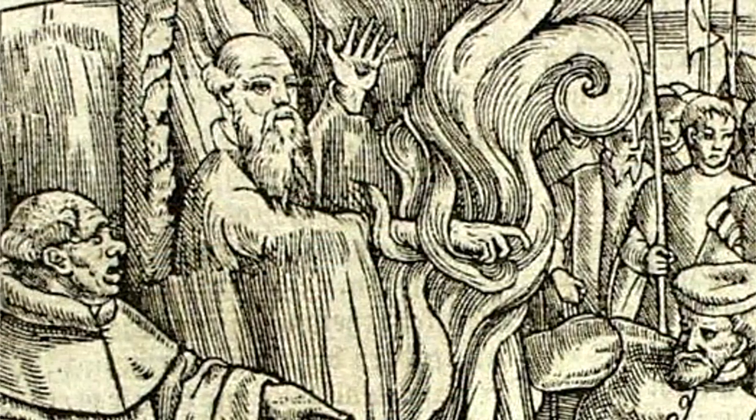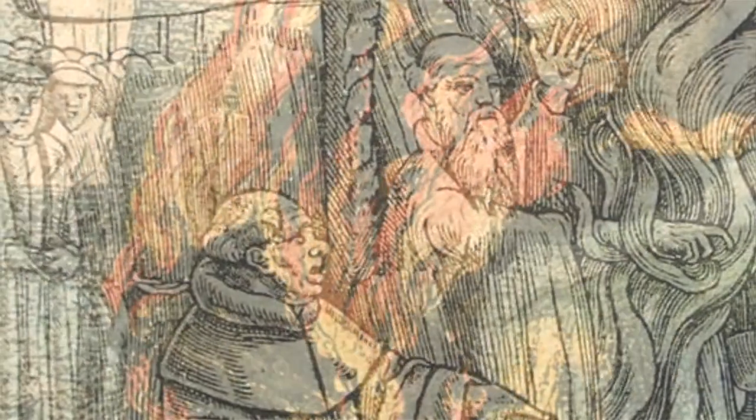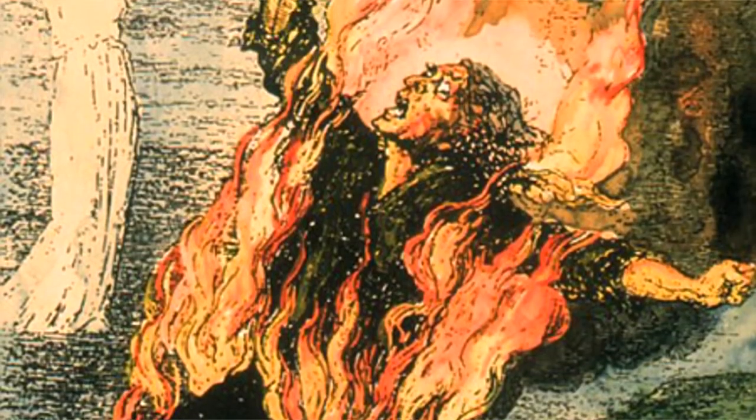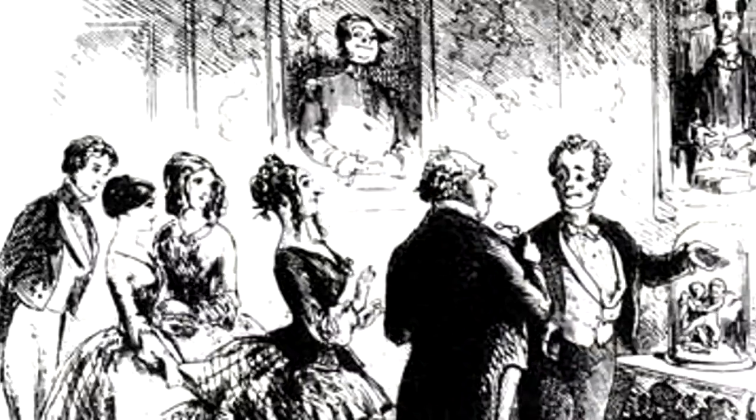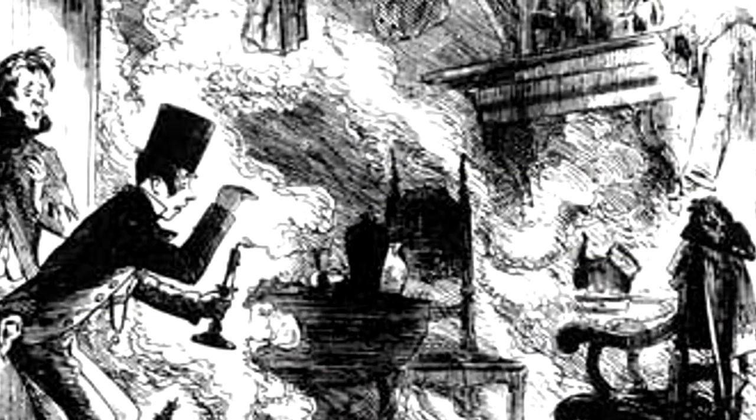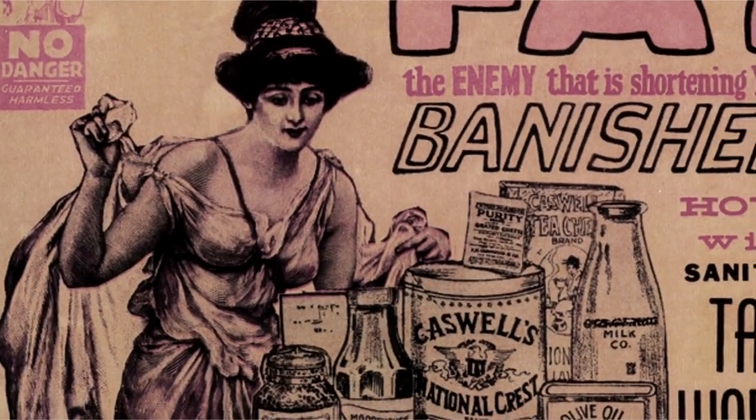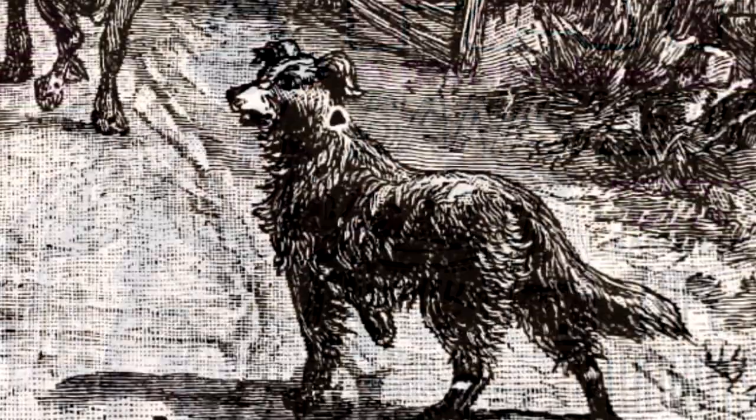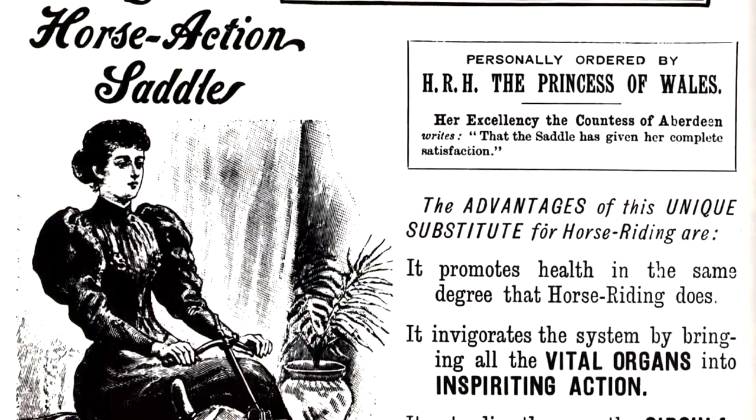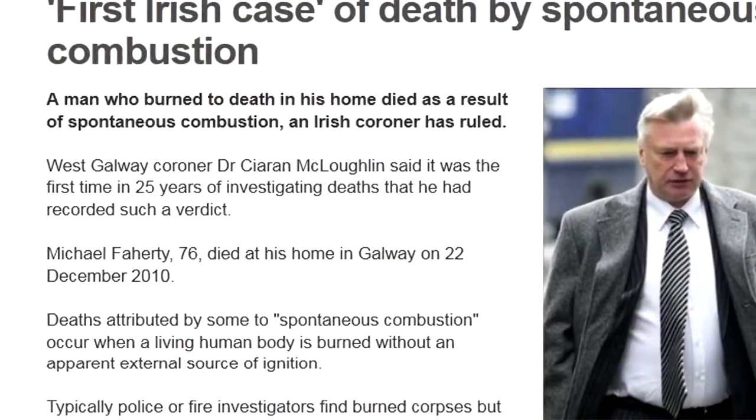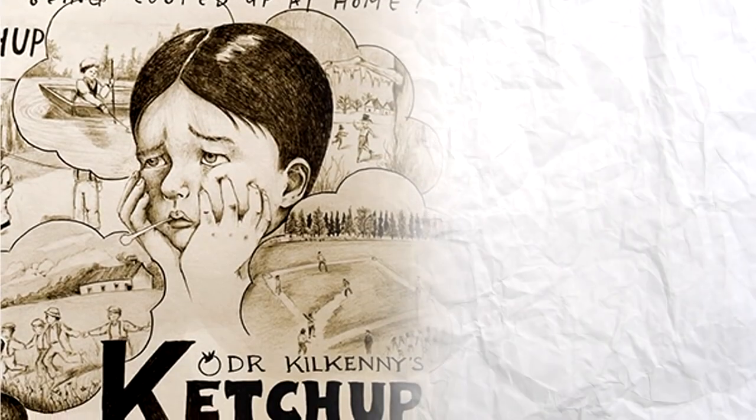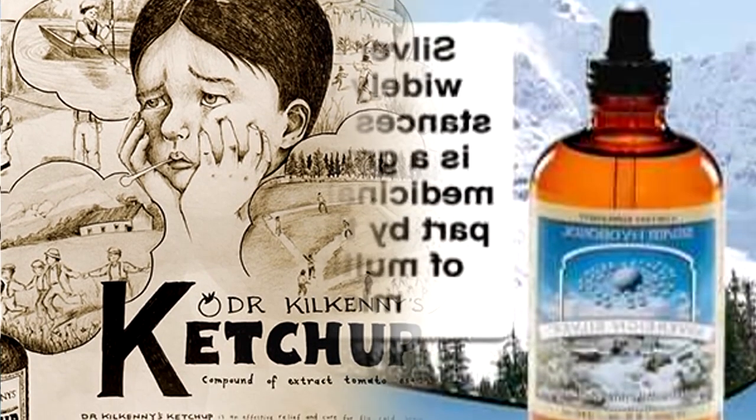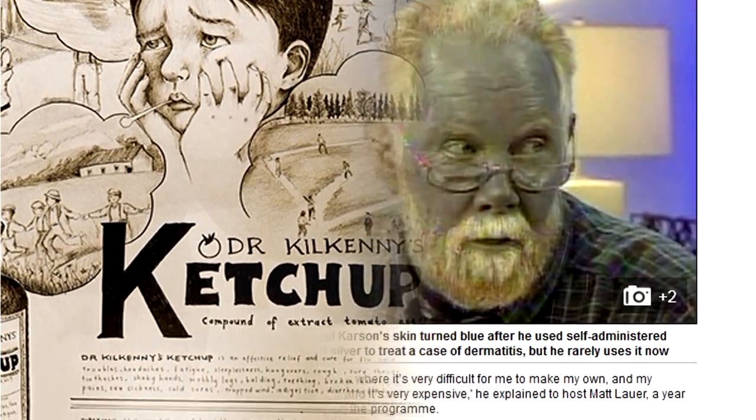The first documented account of spontaneous human combustion, or SHC, dates all the way back to the 1400s with an Italian knight named Polonius Vorstius and a wine-fueled evening filled with women. But the phenomenon really started to gain momentum in the 19th century after Charles Dickens used it to kill off one of his characters in the novel Bleak House. Yes, many of the reports of SHC come from less scientific eras where tapeworms were used for diets, dog poop was a throat lozenge, and vibrators cured female hysteria. But reports of the phenomenon have occurred as recently as September of 2011. And regardless of whether we're talking about the era where ketchup was a cure-all or the one where drinking liquid silver cures us from our blues by literally making us blue.